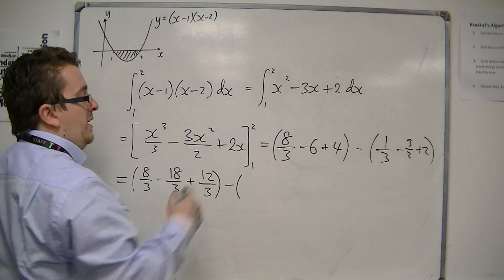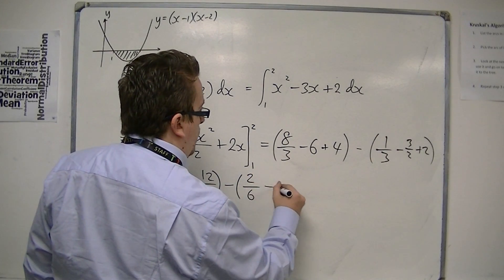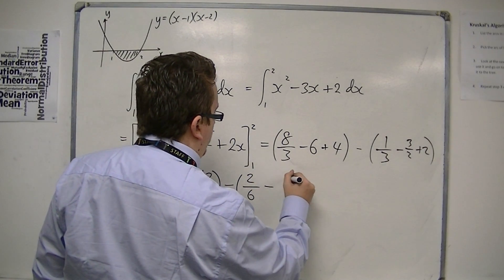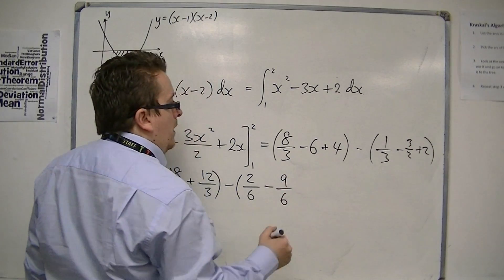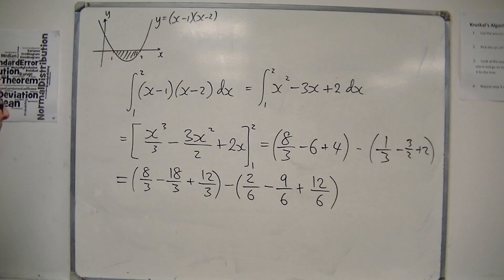And then for the second bracket, we're going to put everything over 6. So we're going to get 2 over 6, take away 9 over 6, plus 12 over 6.